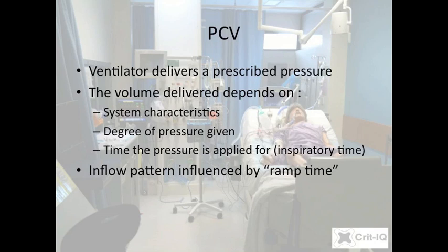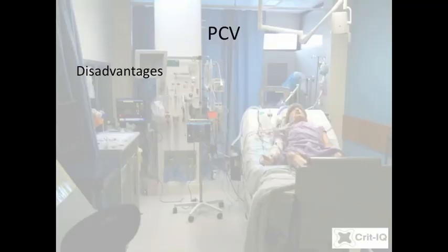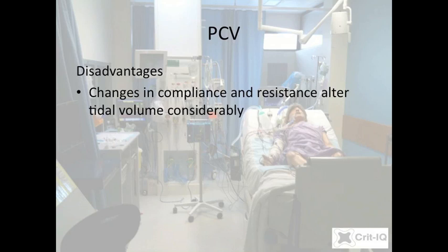Other settings such as PEEP, FiO2, and rate are set just as in controlled mandatory ventilation. The advantage of PCV is that it limits the pressure applied to the lungs and may result in fairer distribution of flow to slow-filling lung units, which may be useful in certain pathologies. The potential disadvantage is that as compliance changes, the volume delivered also changes, resulting in marked under- or over-ventilation. For this reason, setting limits on high and low minute ventilation alarms is very important. Due to the potential for variation in ventilation, PCV is not the ideal mode for controlling CO2.